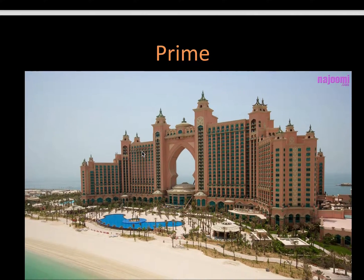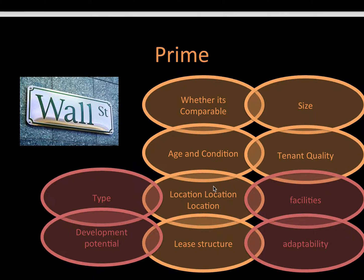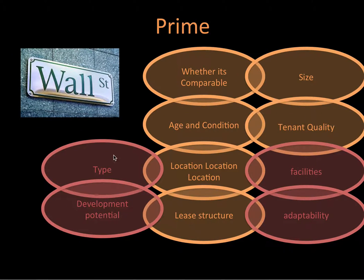So, prime property. It's easy to tell what is prime — it's the location, it's the use of the building, it's what city it's in, all those types of things. But instead of just trying to guess, we have written down a whole bunch of things. You can remember it by the acronym WALL STREET. Prime includes whether it's comparable. If it's a house or an office, those are very comparable, but if you've got a nuclear factory or something really unusual, it's not going to be very comparable, and that's not going to make it prime.